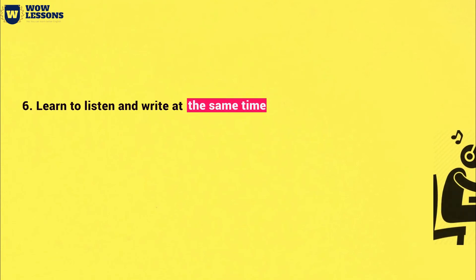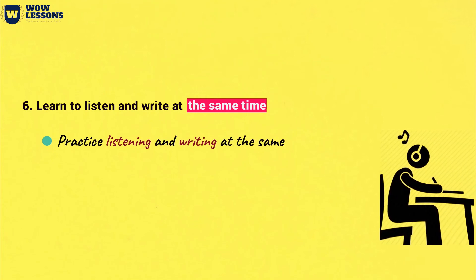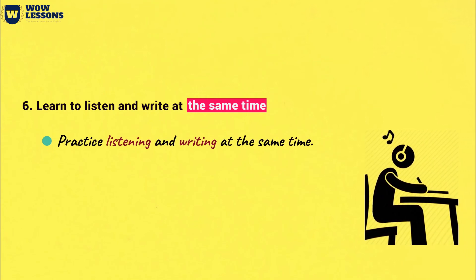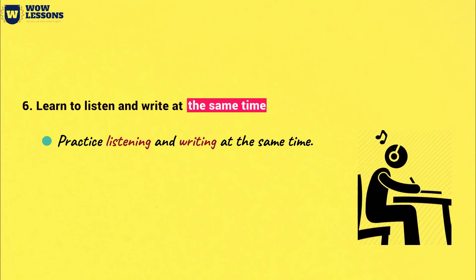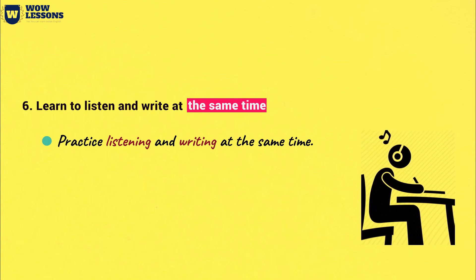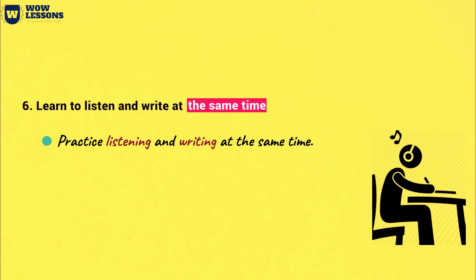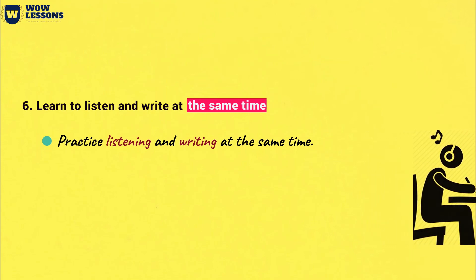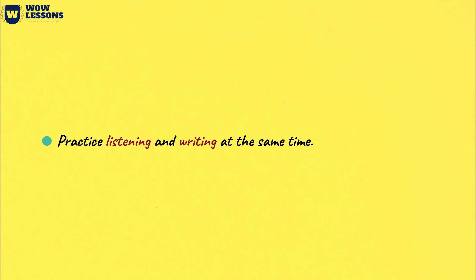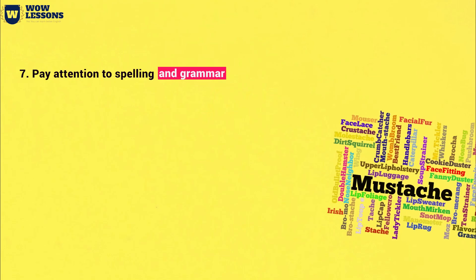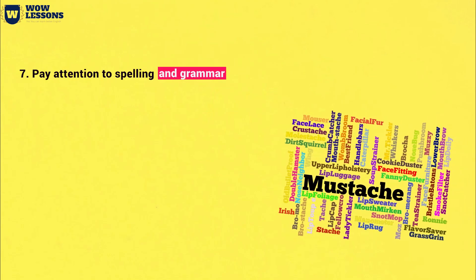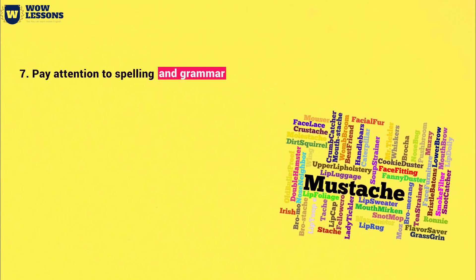Learn to listen and write at the same time. During your IELTS listening test, you can listen to the recording only once. Therefore, you will have to listen and write at the same time. Don't wait for the recording to end to answer questions — you have to do this while listening. But don't write your answers immediately in the form while listening; you are allowed to write on the question paper, so write the answers right there. To transfer the answers to the form, you will have an extra 10 minutes at the end of the listening section. Try to avoid making mistakes in the spelling of words when using grammatical forms — if a word is written with an error, the answer will be considered incorrect.